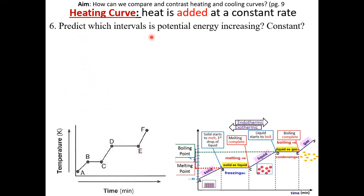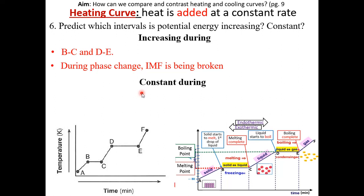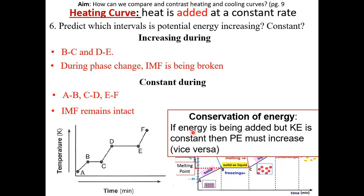Question 6: predict which intervals have potential energy increasing or constant. Potential energy increases during a phase change because the heat added is being used to break the intermolecular force. When an attraction is broken, potential energy increases because it becomes more unstable. The phase changes are during intervals BC and DE, so potential energy will increase during those intervals. Potential energy will be constant at every other interval because the intermolecular forces are intact. Using conservation of energy: if heat is added and kinetic energy is constant, then potential energy must increase; or if kinetic energy is increasing, then potential energy must be constant.